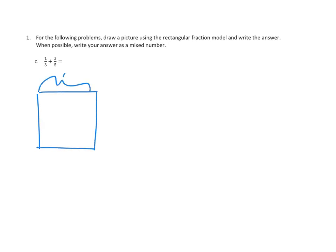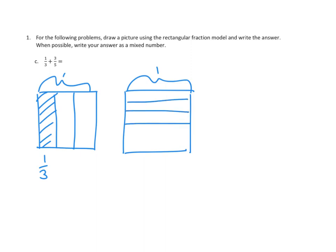We've got 1 over here. This is a whole. We're going to do this in thirds. So we're going to partition our model into thirds, and we're going to shade in one of those. I'm going to label that here below. That's 1/3.